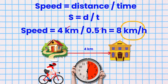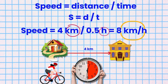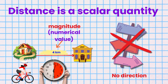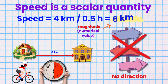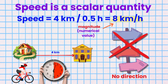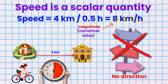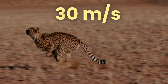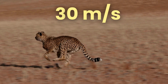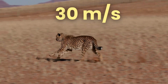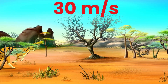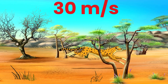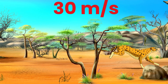Notice that the unit for speed depends on the units used for distance and time. Since distance is a scalar quantity, speed is also a scalar. This means speed has only magnitude or numerical value and does not account for direction. A cheetah, one of the fastest land animals, is sprinting at a speed of 30 meters per second. No matter which direction the cheetah is racing, its speed only indicates how fast it is moving without accounting for direction.